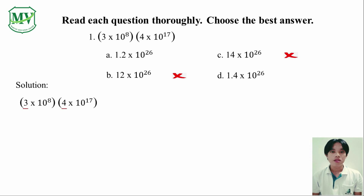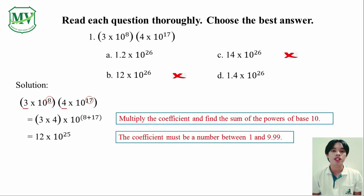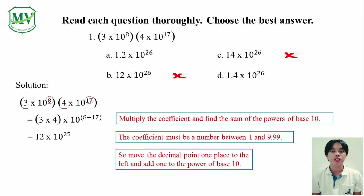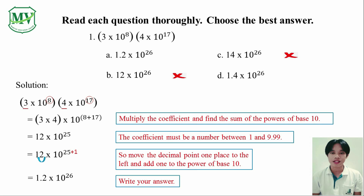To find out which one is the correct answer, let's do the solution. First, multiply the coefficients and then add the powers. Simplify. We still need to adjust our exponential notation to follow the general format. We can do this by moving the decimal point one place to the left and adding 1 to the power of base 10. Our final answer is 1.2 times 10 to the power of 26. That's letter A.